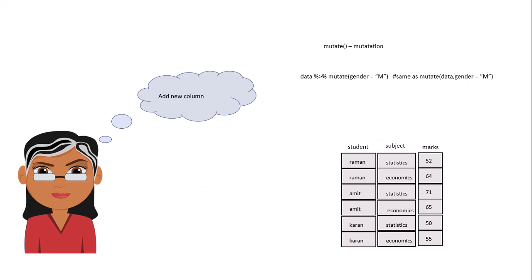Now suppose you want to add a new column to the dataset. For adding a new column you can use the mutate function — mutate is for mutation. The syntax is: first give the data frame as the first argument, then give the new variable name you want to create. Here I am creating a gender variable — Raman, Amit, and Karan are all male, so I assign 'M'. When you run this, it creates a new variable called gender.